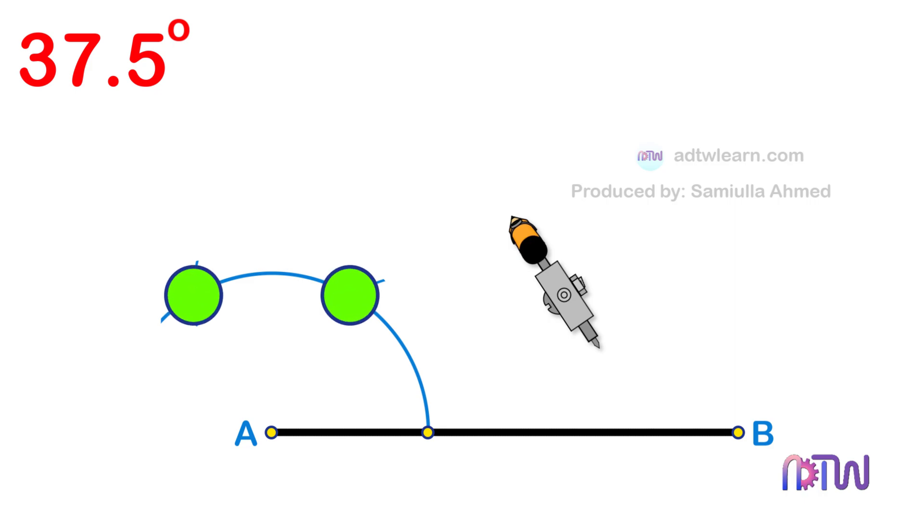After this, using these points as centers, cut arcs as shown. Draw a line passing through this point from endpoint A of the line segment.